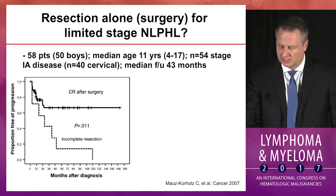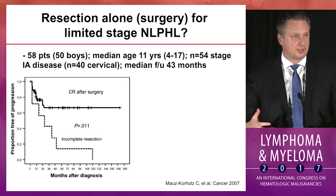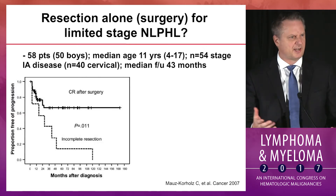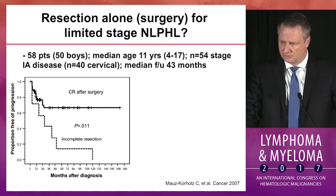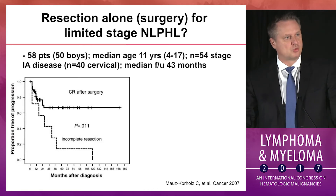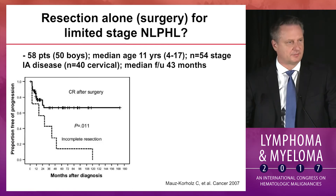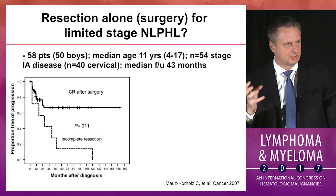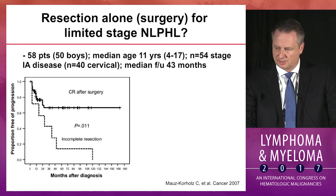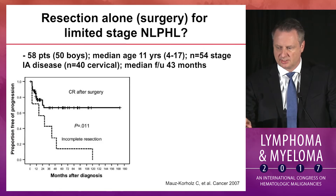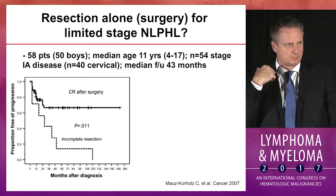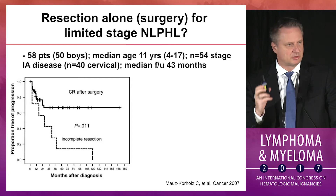Regarding treatment, there is no single standard — just like classical Hodgkin's — and there aren't many randomized studies given the rarity of this disease, which is only about 5% of all Hodgkin lymphoma. There is pediatric literature supporting surgical resection for stage 1A disease, though we don't really consider that in the adult world. When they say resection with complete remission meaning negative margins — thinking like a solid tumor — the vast majority of patients on the CR line were stage 1A cervical.